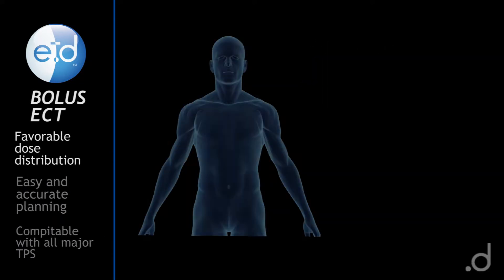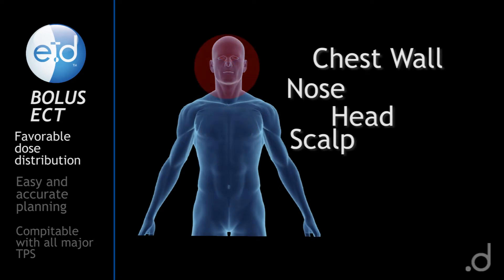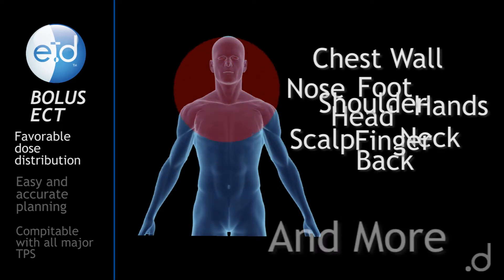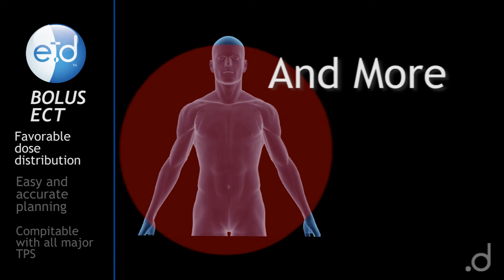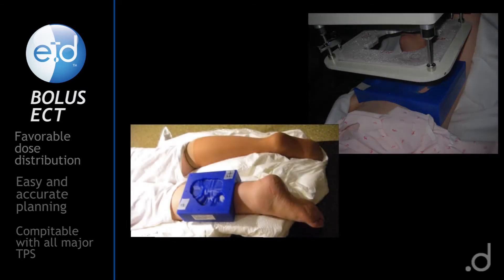Bolus ECT is particularly suited for tumors on the chest wall, nose, scalp, head and neck, and other sites where tumor volume has spread out near the patient surface, rendering photon treatment — even IMRT — problematic for a variety of reasons.